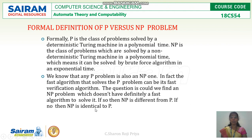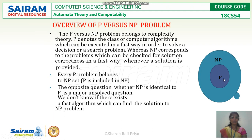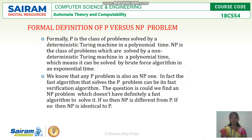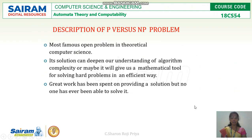Otherwise, NP is identical to P. What does identical mean? P is the class of algorithms for a decision problem and NP is the class that checks the correctness of the solution. If the algorithm that checks correctness is also the fastest decision algorithm, then P equals NP. If not, both classes will be different.